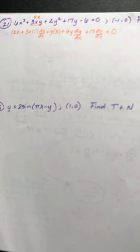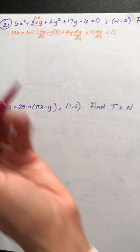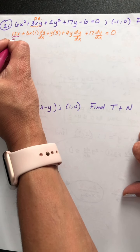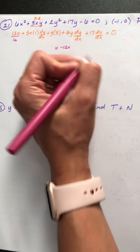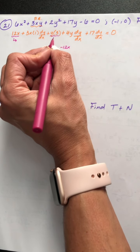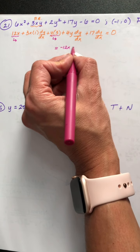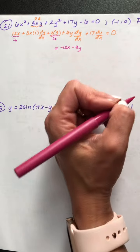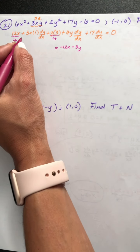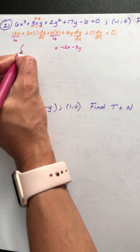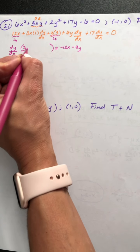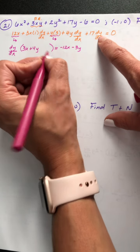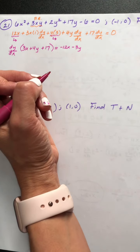Now we need to clean this up — keep dy dx's on the left and factor out dy dx, moving other terms to the right. The 12x we subtract and put on the other side. That term has dy dx; the 3y term does not — y times 3 is 3y, positive, so subtract to move it to the other side. The remaining three terms with dy dx factor out: 3x, positive 4y, and positive 17. I judged the spacing right this time.